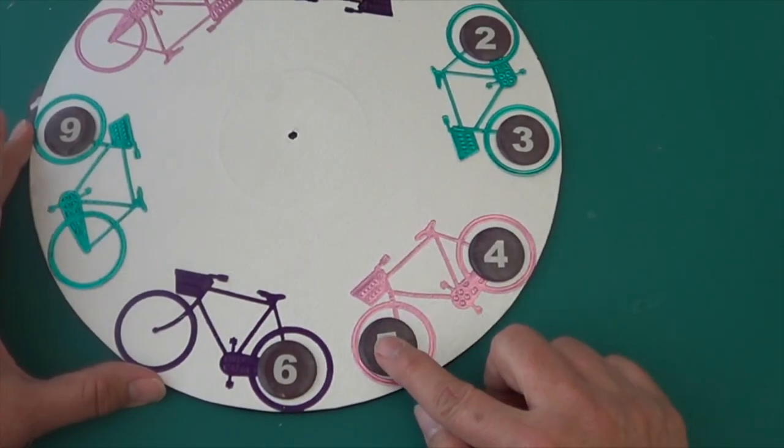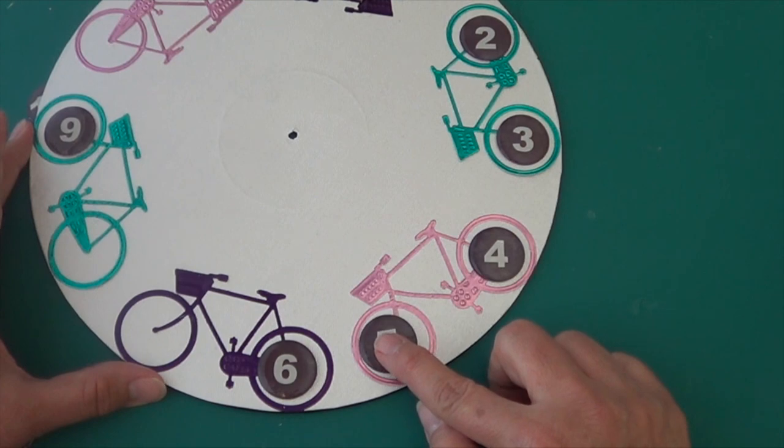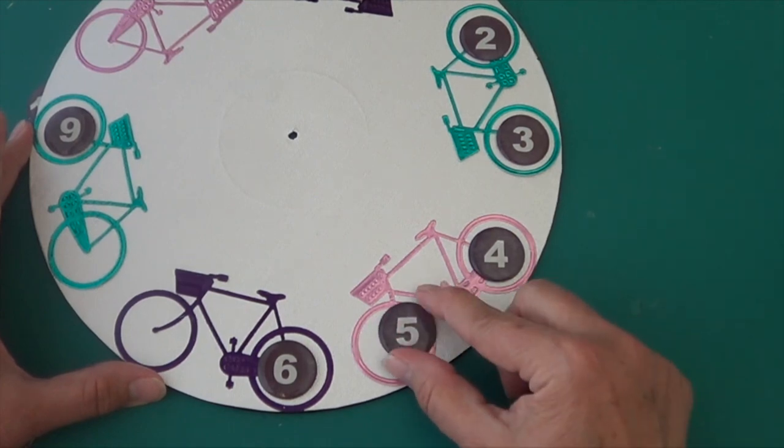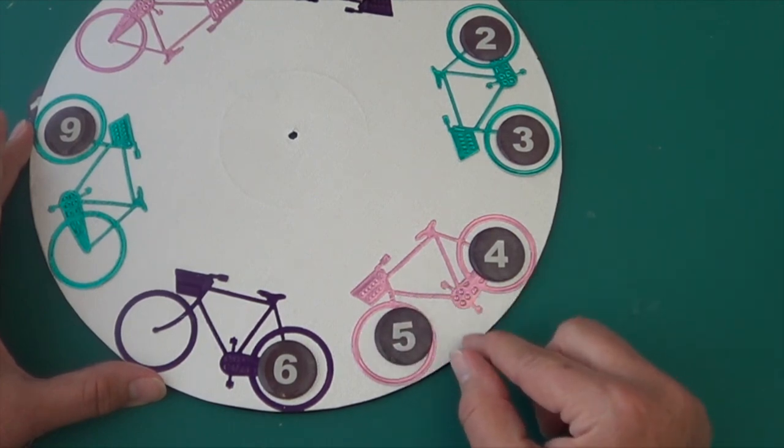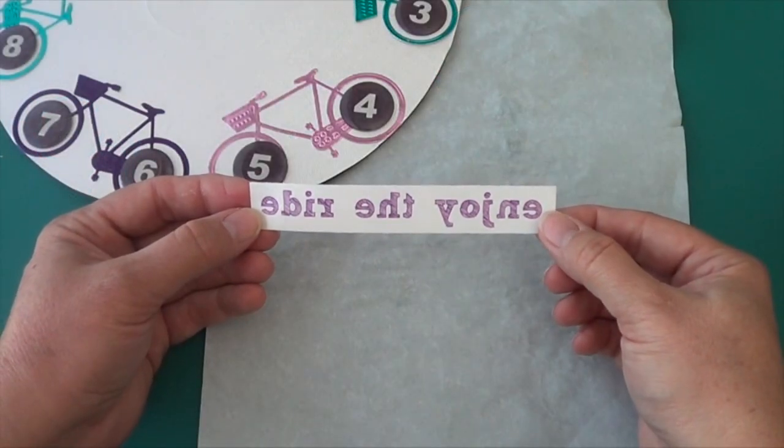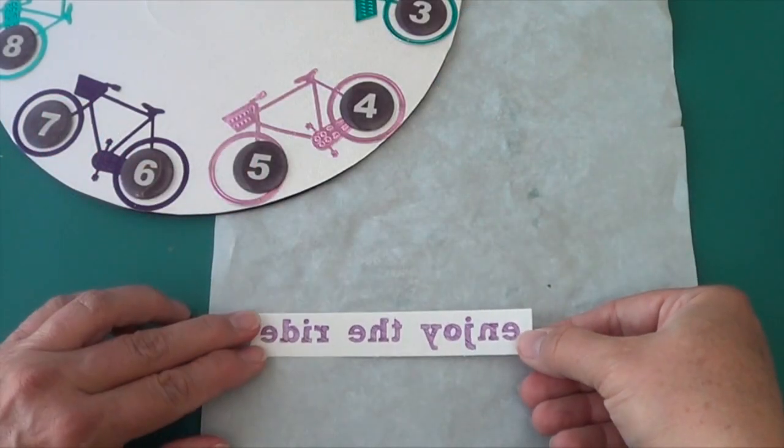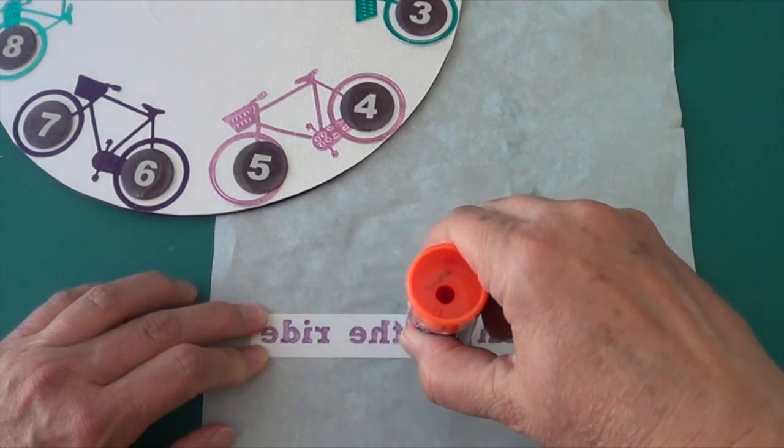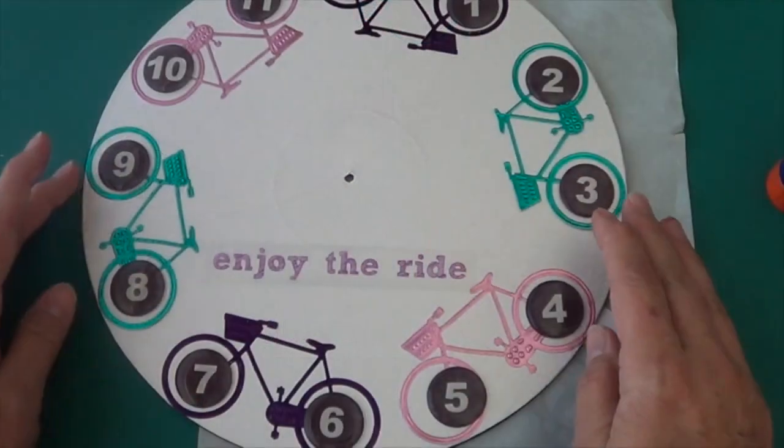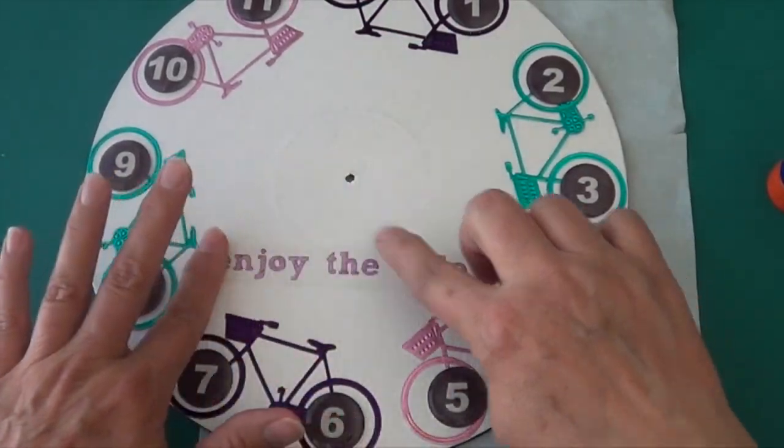To tell the time the right way, print whatever sentiment you like in reverse onto inkjet film, and then use a glue stick to adhere it inside down. Put that right on the face of the clock and press it down real smooth.